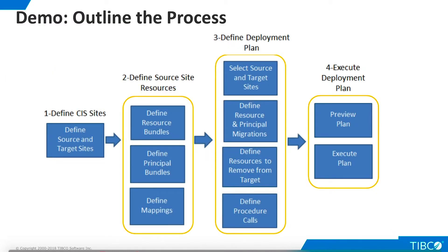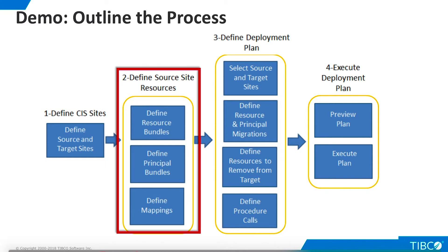We are ready to begin our demo. First, let's outline the overall process we will use in Deployment Manager. We'll tell Deployment Manager about our dev and QA instances. Next, we'll define groups of artifacts we want Deployment Manager to migrate. These groups are called bundles. There are two types of bundles: resource bundles include development artifacts such as data source definitions, views, procedures, and so on; principal bundles include domains, groups, and users.